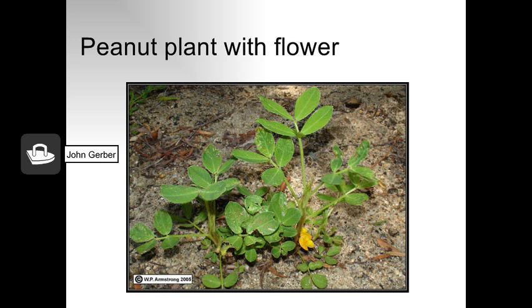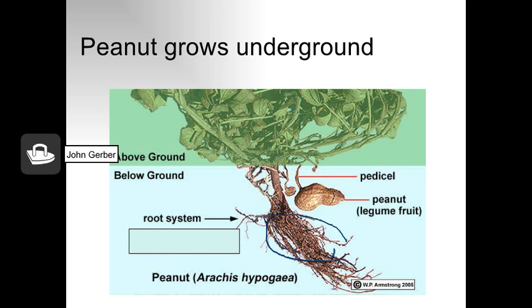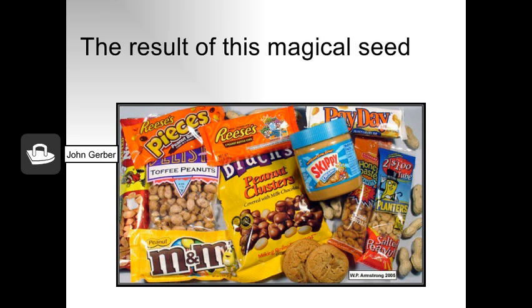Here's a good test question: did you know the peanut that we eat is an underground fruit? It starts with a flower on the plant. Here's a peanut plant with a fibrous root system — that little pedicel is growing down from the flower, and the nut, or fruit containing seeds, is growing underground. Very few people know that a peanut is a fruit that grows underground. You better know this anyway because it's probably on a test.